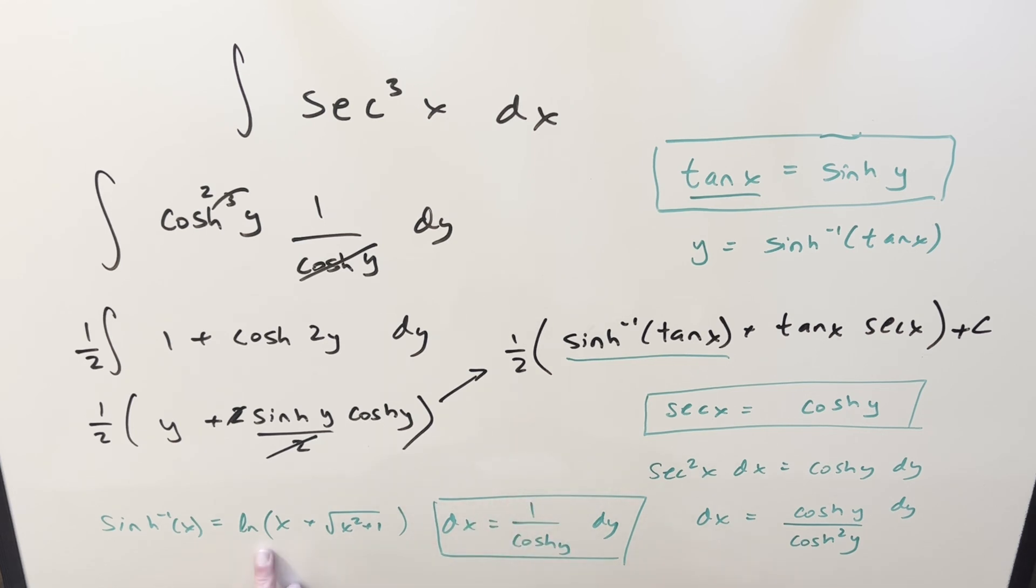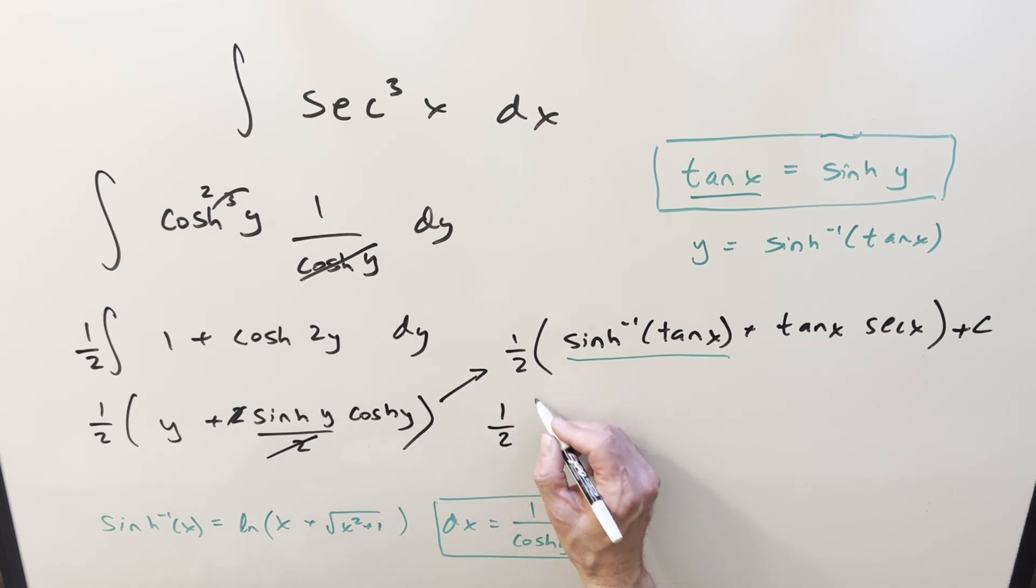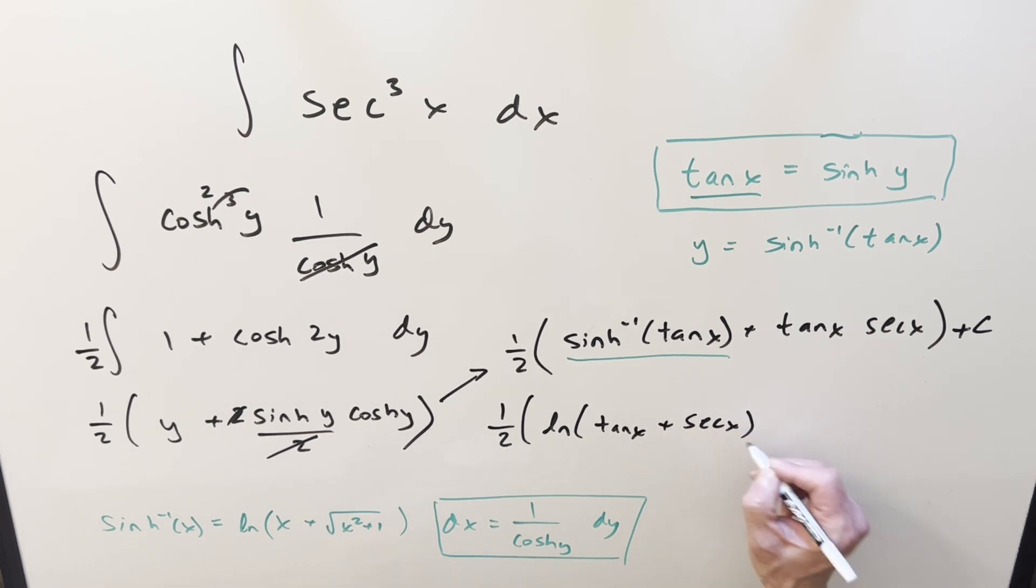So if we rewrite it using this formula, what's going to happen? Now what we have here is going to be one half times natural log, x is going to be tan x. So we have tan x plus square root of tan squared plus one. But tan squared plus one is going to be secant squared inside the square root. So this is just going to give me a plus secant x plus tan x secant x, add a plus c, and that's it.